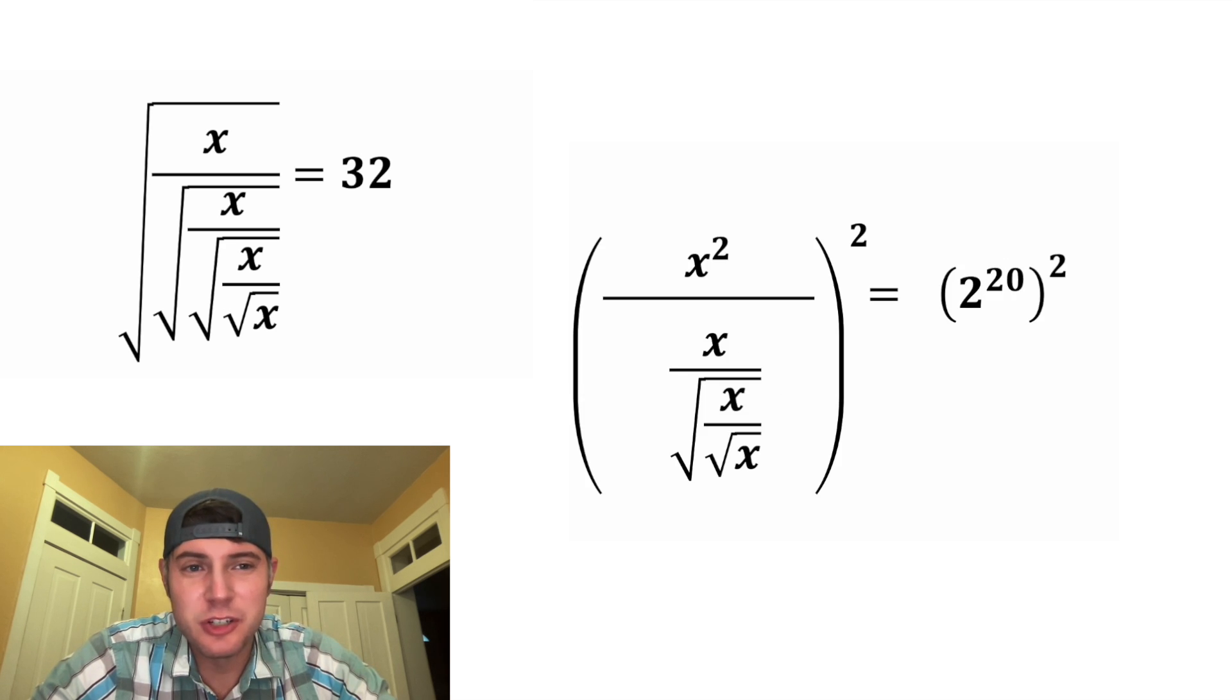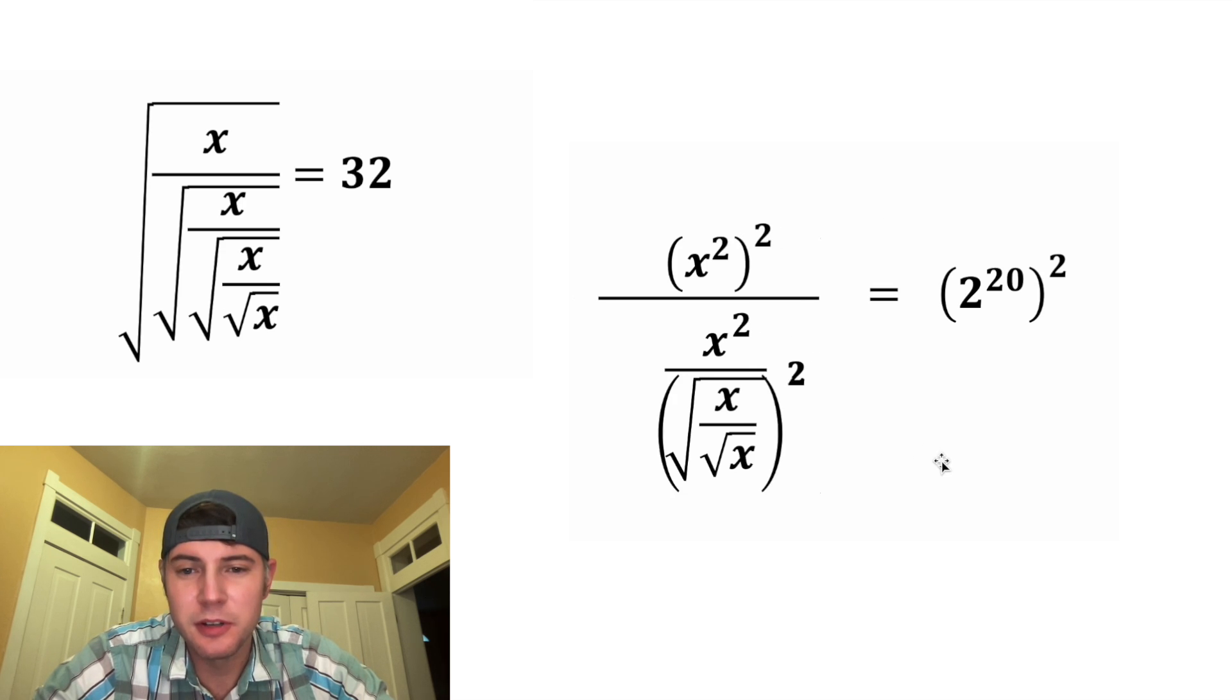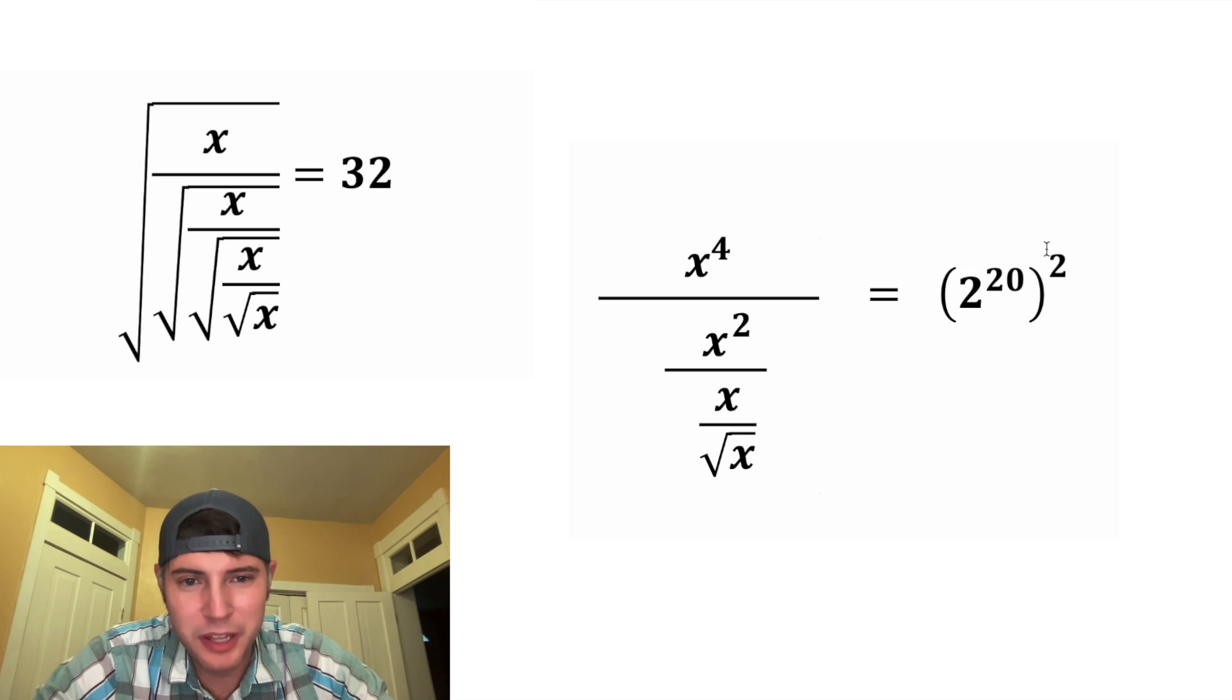And then once again, we're going to square both sides of the equation. This squared can distribute to this term, this term, and this term. It'll look like this. And then x squared squared is x to the 4th. This guy's good. And on the very bottom, this square root and this square will cancel each other out. And then on the right-hand side, we're going to multiply these exponents again to give us 2 to the 40.